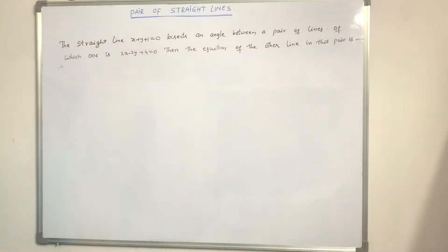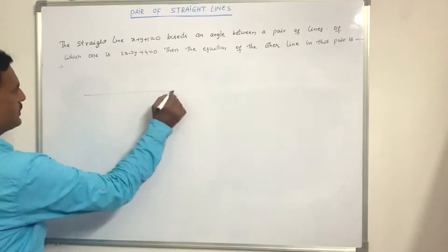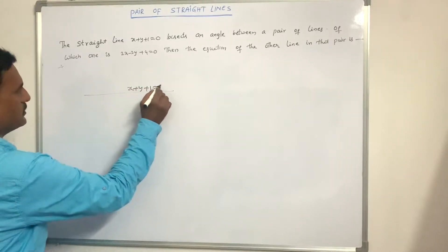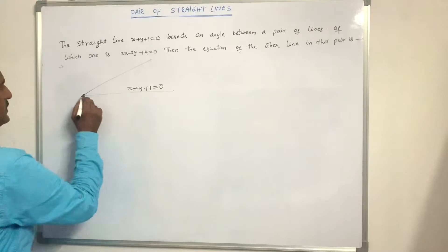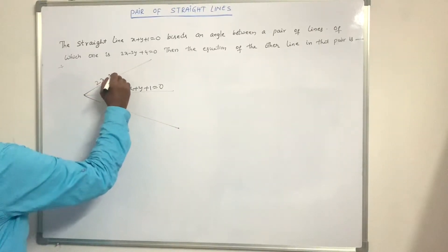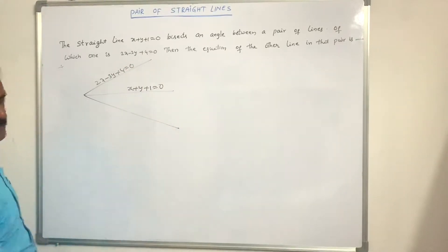The straight line x + y + 1 = 0 bisects an angle between a pair of lines, of which one is 2x minus 3y + 4 = 0. Find the equation of the other line in that pair.